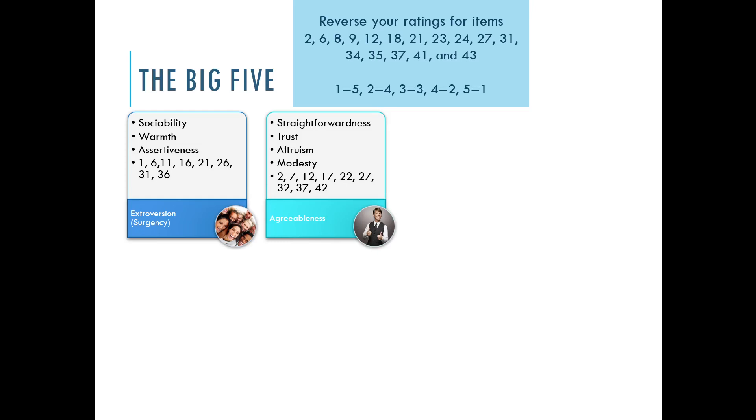Next is the conscientiousness scale, which is a lack of impulsivity—including competence, persistence, and prudence. To calculate this score, add up the items listed here.